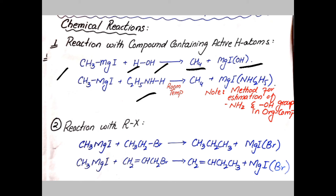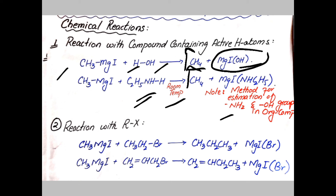Similarly, alkyl magnesium iodide reacts with a primary amine at room temperature to produce methane and a magnesium iodide amine compound. This method is used for the estimation of NH₂ (amine) groups and hydroxyl groups in a given organic compound. The methane produced evaporates as a gas because it is highly volatile, leaving behind the magnesium salts.